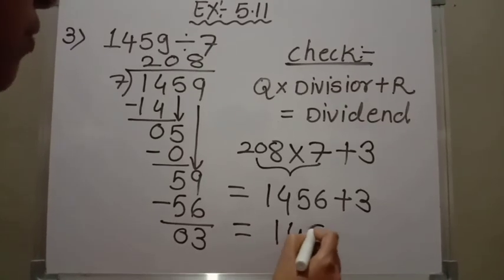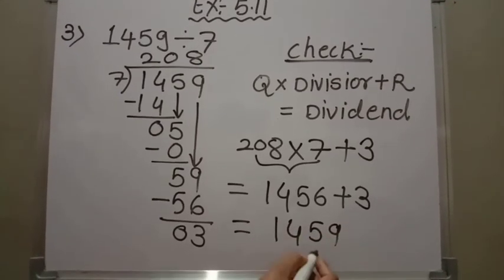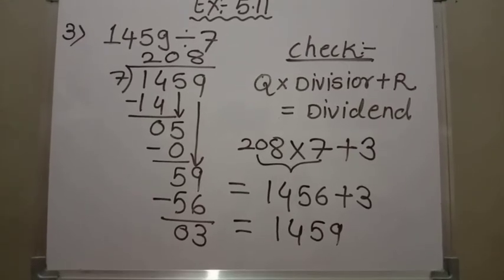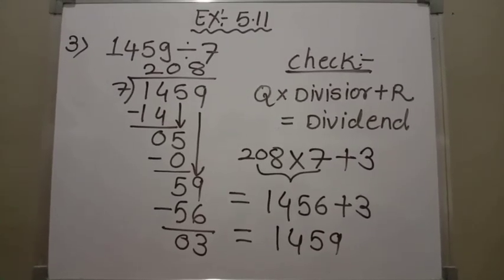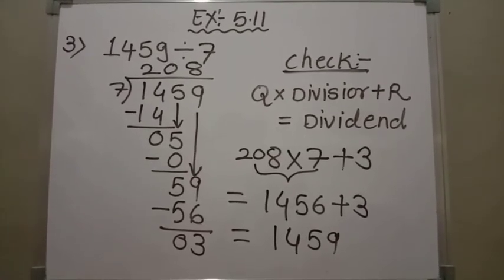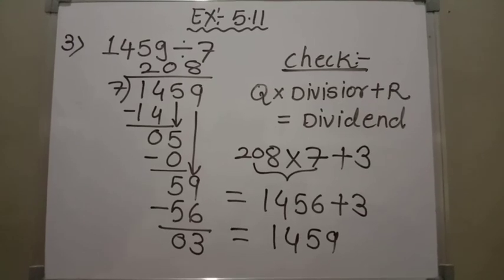So it has become 1459, which is the same as the dividend given in the division question. It means our division is correct. So children, likewise you can solve the remaining problems given in your textbook in exercise 5.11.